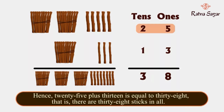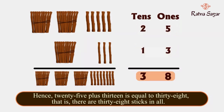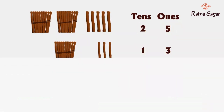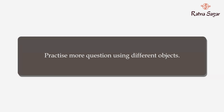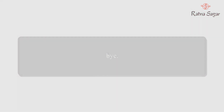Hence, 25 plus 13 is equal to 38. That is, there are 38 sticks in all. Practice more questions using different objects. Bye!